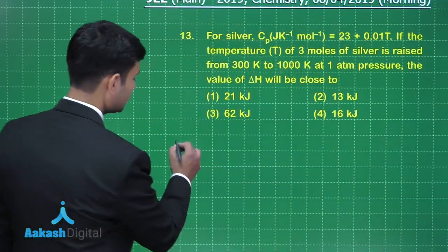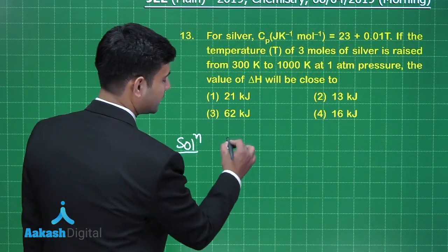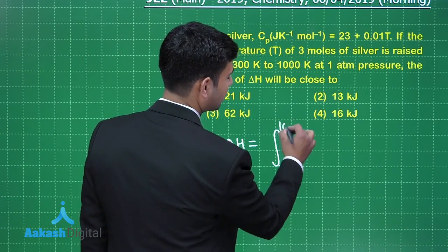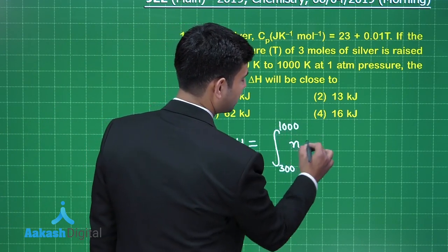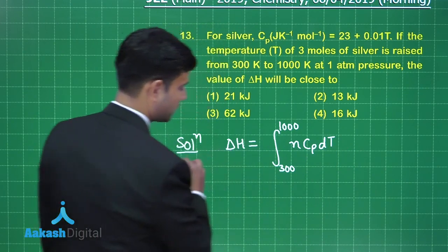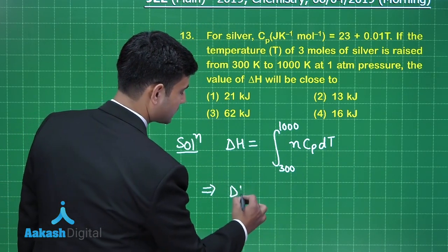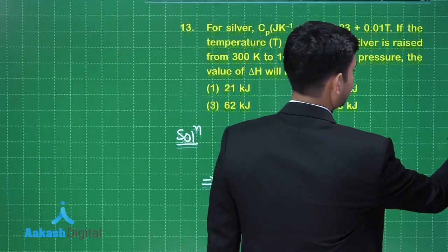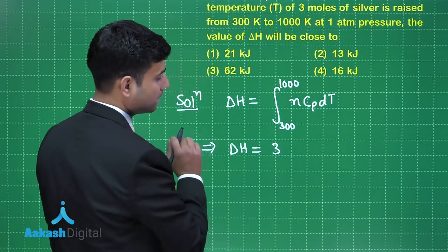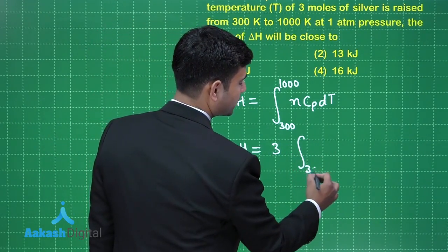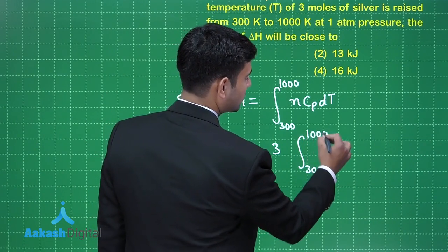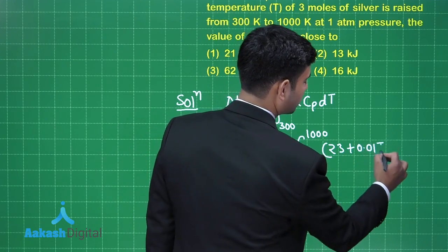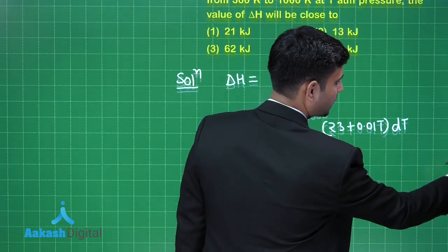To find ΔH, we write ΔH = integration from 300 K to 1000 K of Cp dT. Since we have 3 moles of silver, we write ΔH = 3 × integration from 300 K to 1000 K of (23 + 0.01T) dT.